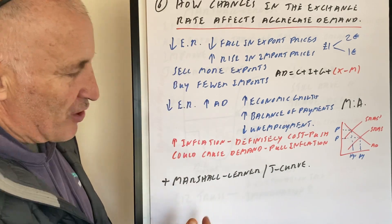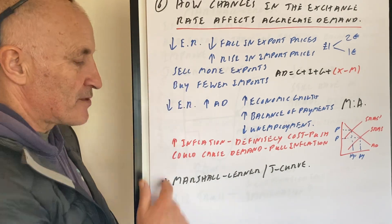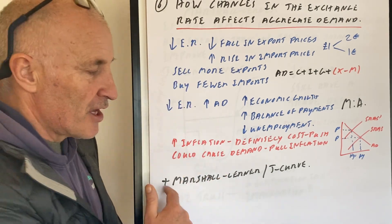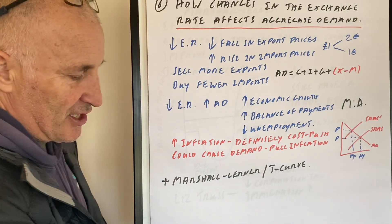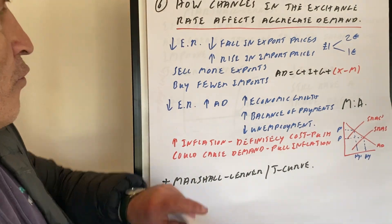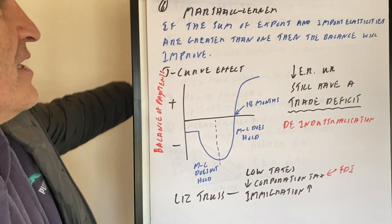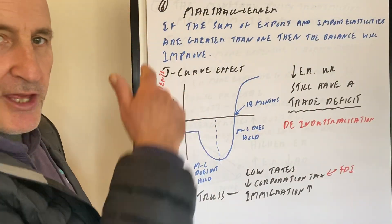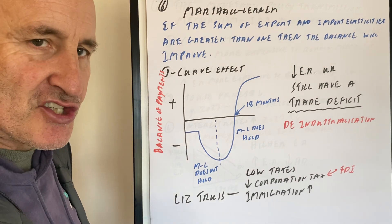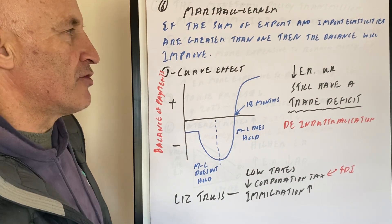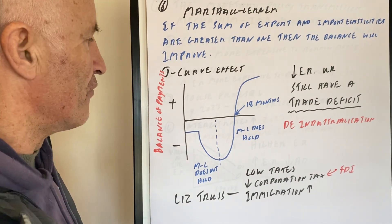However, even if the exchange rate falls, it may not be the case that the balance of payments will improve, due to the Marshall-Lerner condition and the J-curve. The Marshall-Lerner condition states that the sum of export and import elasticities must be greater than one for the balance of payments to improve.